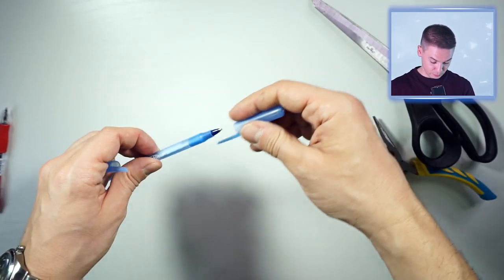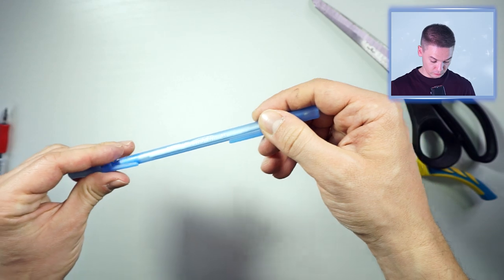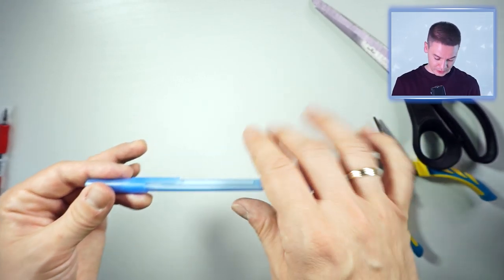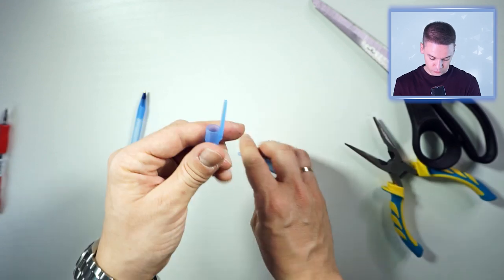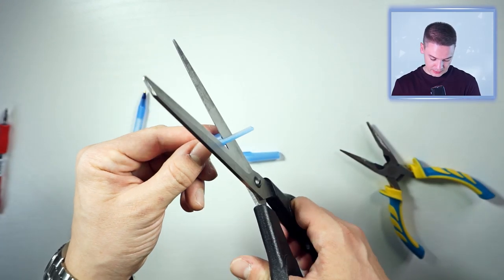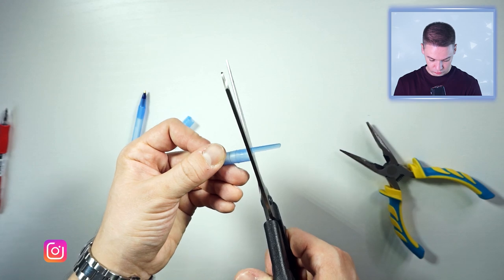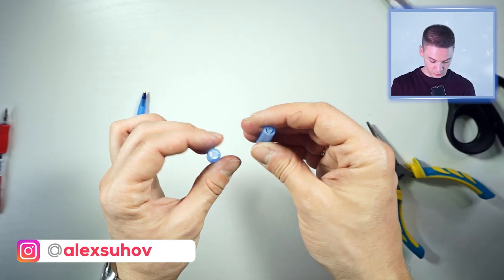Now take the caps and put them on your pen mod. And as you can see, these clips look ugly, and we will need to get rid of them. For that, take scissors again and just cut them out. Now they look fine.